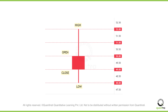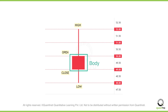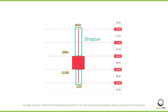Candlesticks mainly consist of two components: the body and the shadow. The body is the filled portion of the candlestick, and it signifies the range between the open and the close prices. On the other hand, the shadow — upper shadow and lower shadow — helps us identify the highest and lowest price points. These are sometimes also referred to as candle wicks.